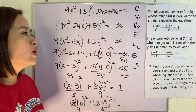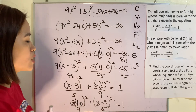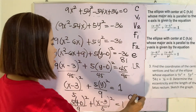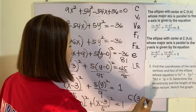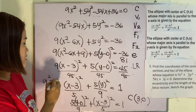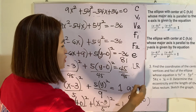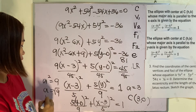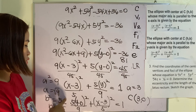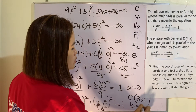Our ellipse has its major axis at the y-axis. We can now identify our center at h, k, which is (3, 0). Our a squared is 9, so a is the square root of 9, which is 3. Our b squared is 5, so b is equal to the square root of 5.